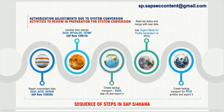This program automatically detects and repairs inconsistencies that have a negative influence on the PFCG transaction or the upgrade post-processing steps in SU25. If you forget to execute this report in the beginning before starting SU25 steps, you should at least run it before starting step 2C in SU25.